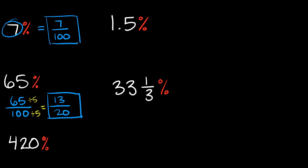Next we have 420%. Again, all you have to do is take this number and put it over 100, so that gives us 420 over 100.